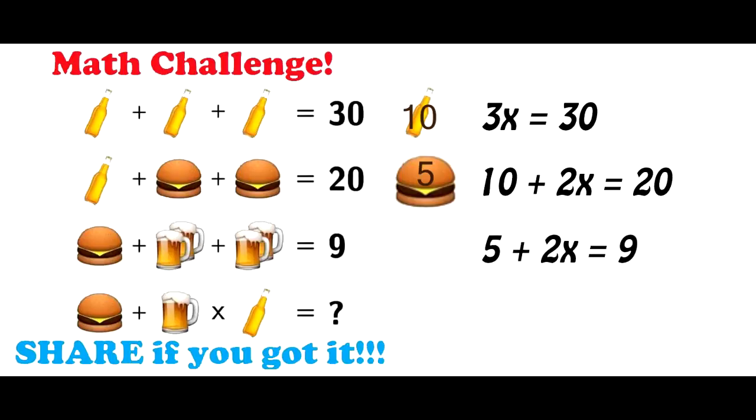Next, we substitute the value of five for the burger, and then we say five plus two mug pairs is equal to nine. We take five from each side, and we have two mug pairs equals four. We cut each one in half, and then we have one mug pair equals two.